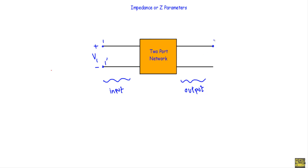This is port 2 and this is 2 prime. We indicate the output voltage by placing plus here and minus here, and the output voltage is V2. The input current I1 will be entering the two-port network and the output current I2 will also be entering the two-port network.